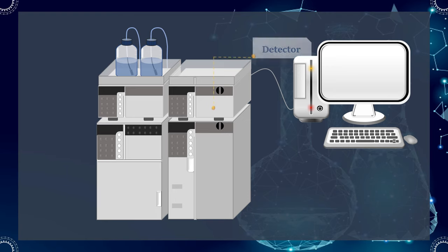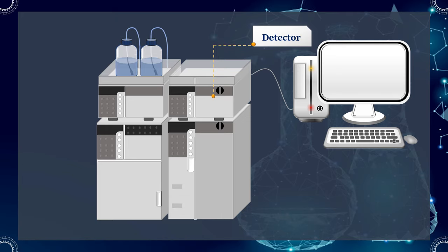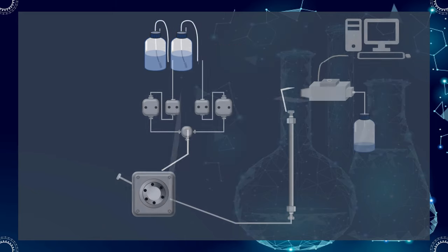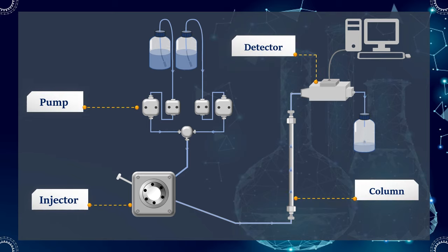There is also a detector attached to the HPLC system, which measures the analytes after their separation in the column. The pump forces the mobile phase through the column, and then the detector, under high pressures.